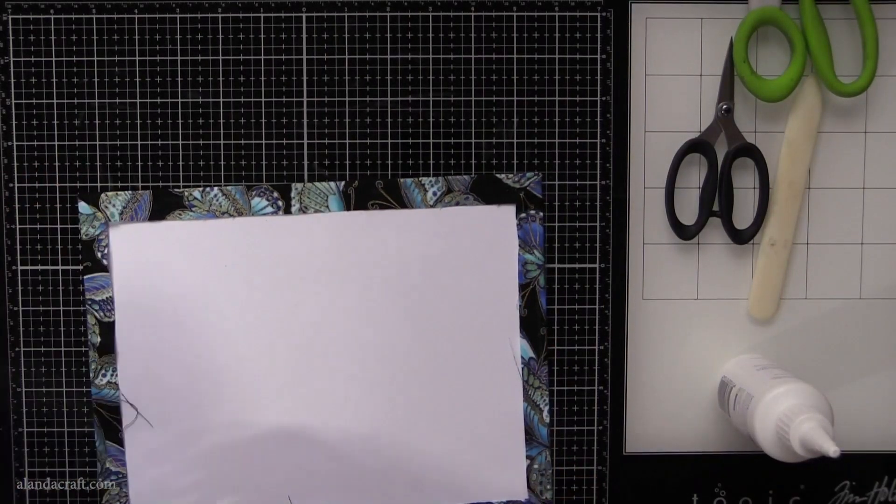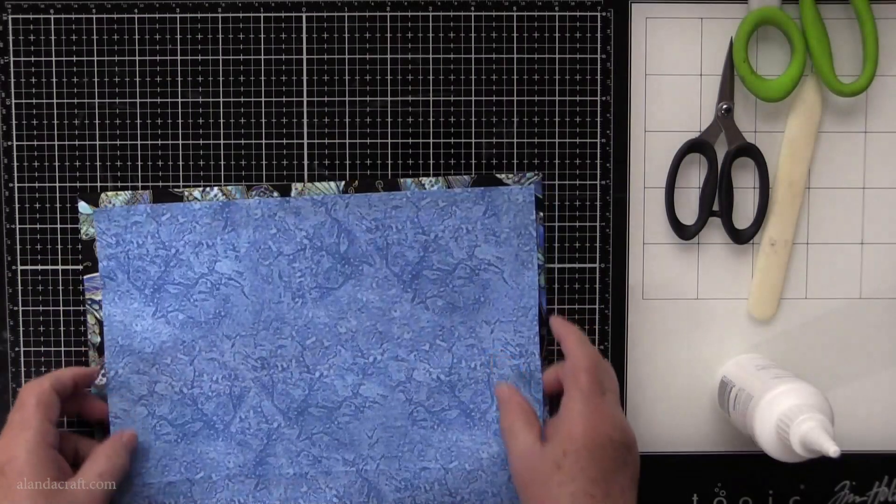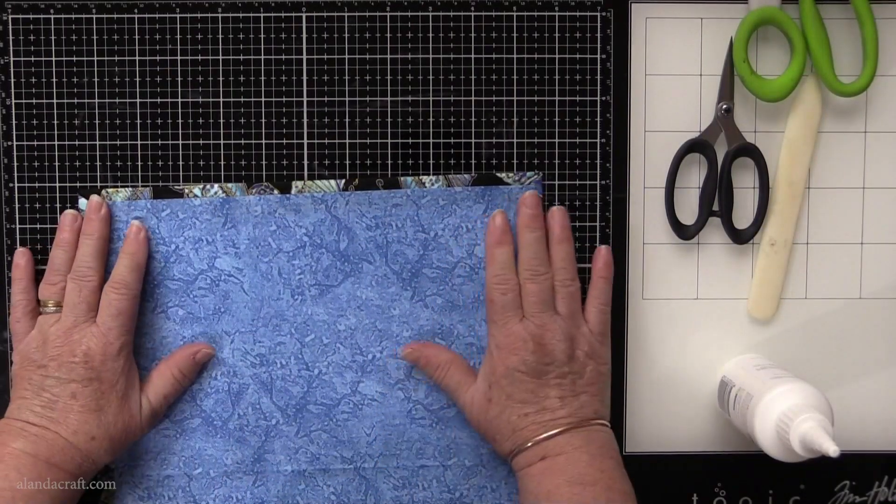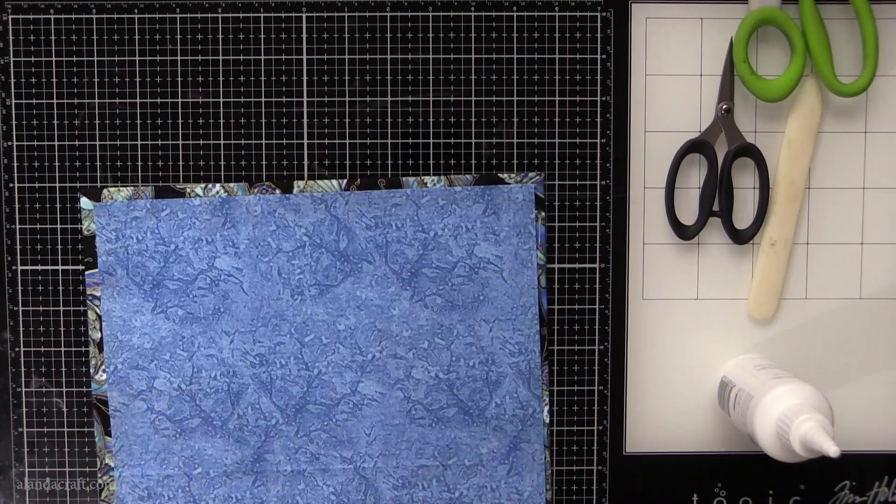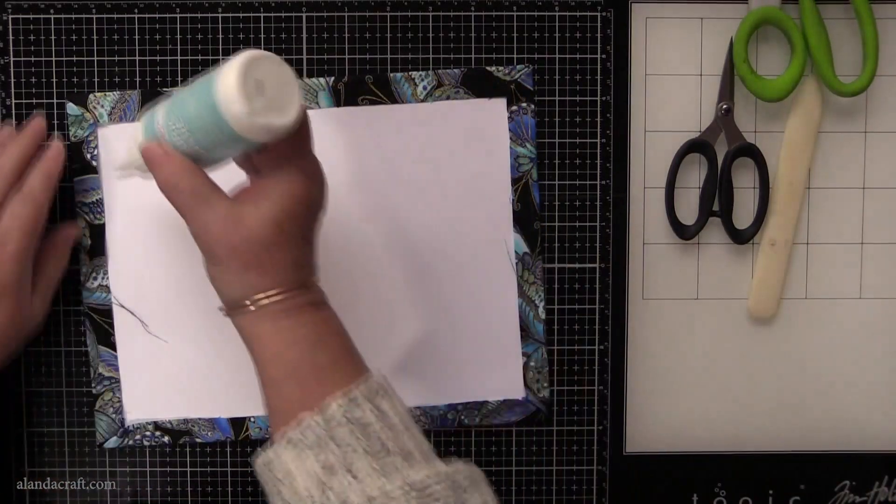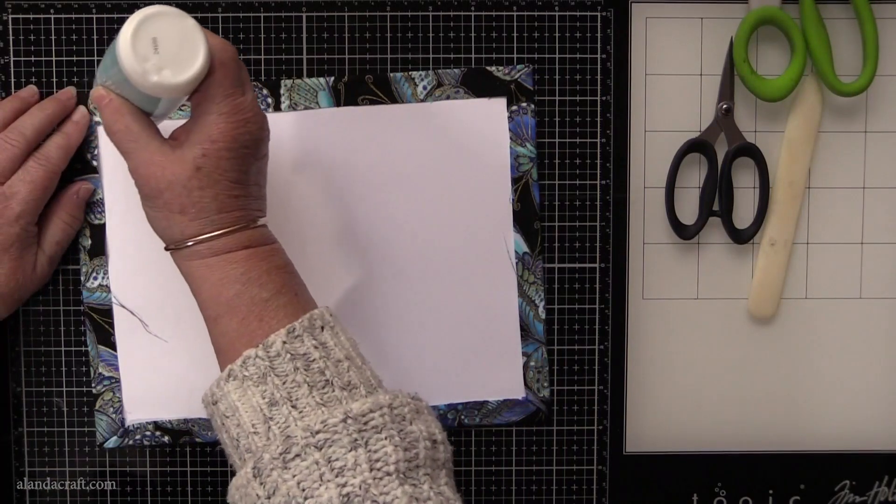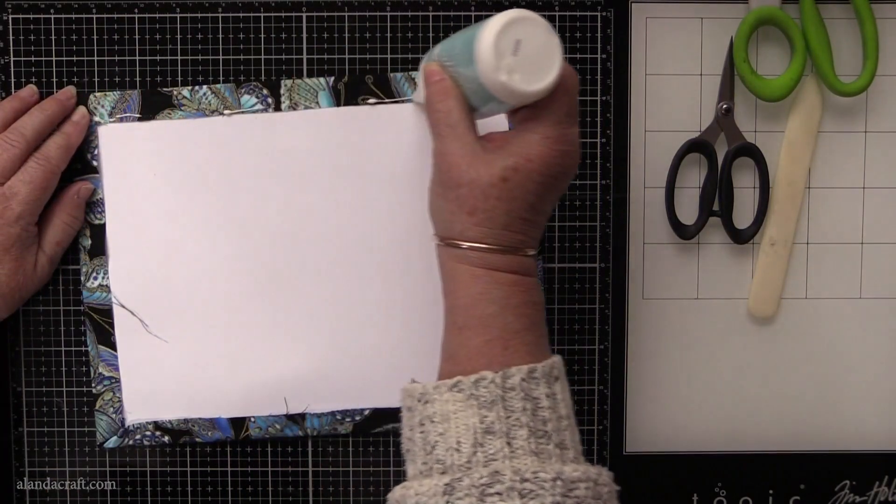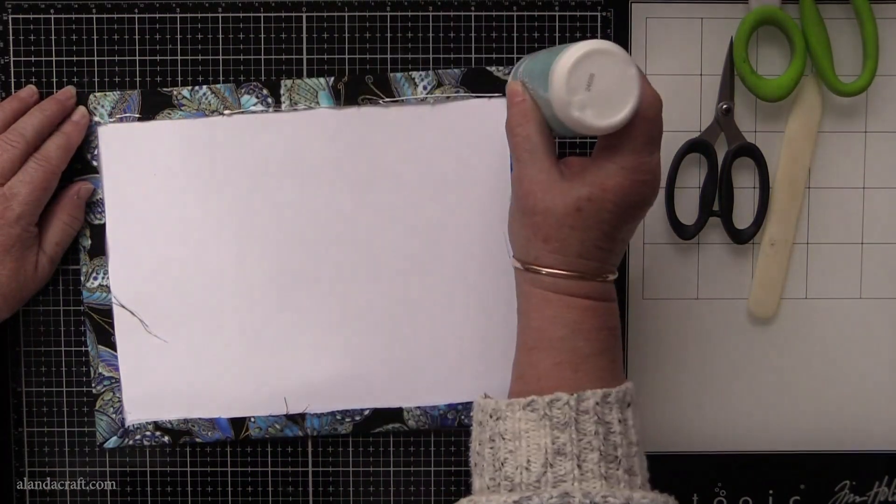Okay, now when we've done that we want to place our other piece over here and what we're going to do is glue that down and then we're going to sew it. So here we go, just a little bit over the edge of your fabric.